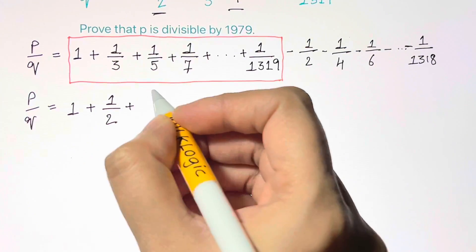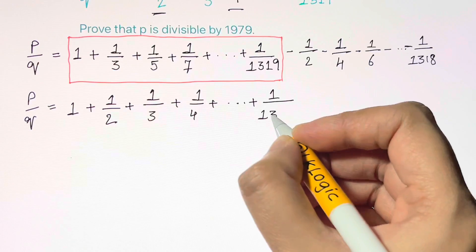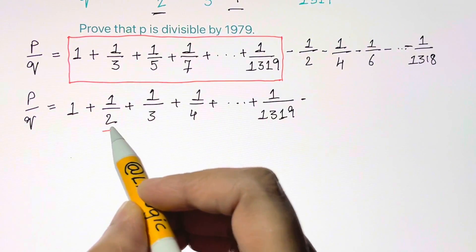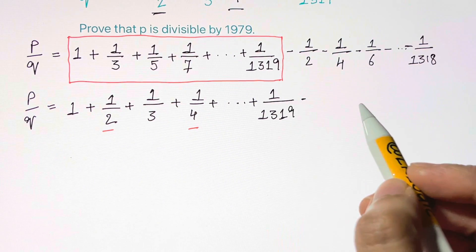So I'm going to add in some even terms to make all the fractions' denominators consecutive. Adding 1 over 2 plus 1 over 4 and so on, it becomes a finite harmonic series: 1 plus 1 over 2 plus 1 over 3 plus 1 over 4 up to 1 over 1319.